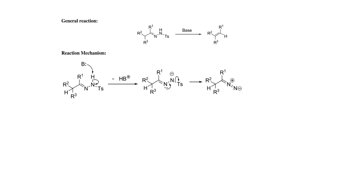In the next step, nitrogen with a lone pair of electrons will move towards the other nitrogen atom to form a pi bond between the two nitrogen atoms. As a result, the tosyl group will leave and the bond will shift back towards the tosyl group. So the diazo compound is produced in the second step.